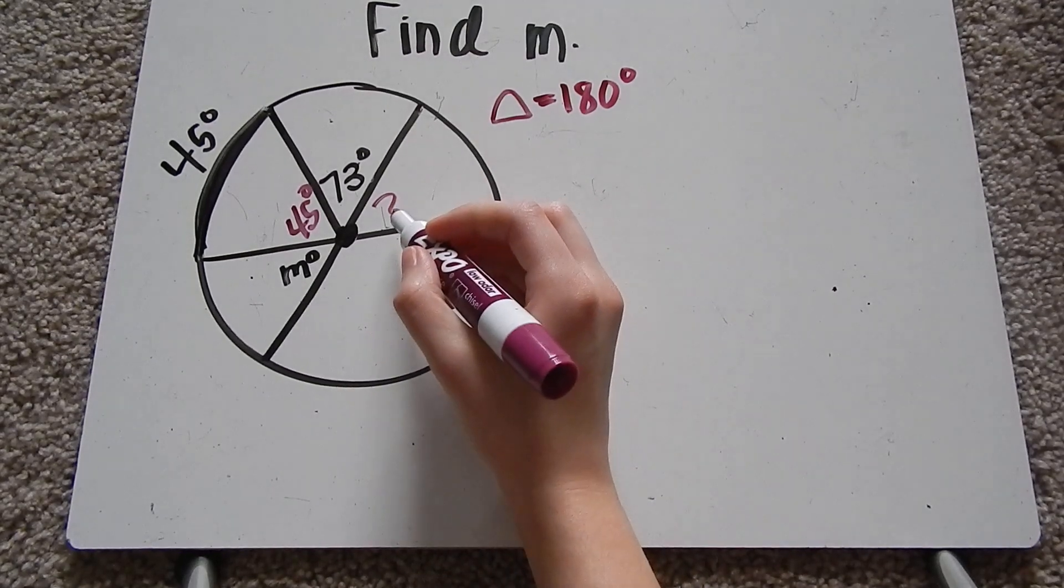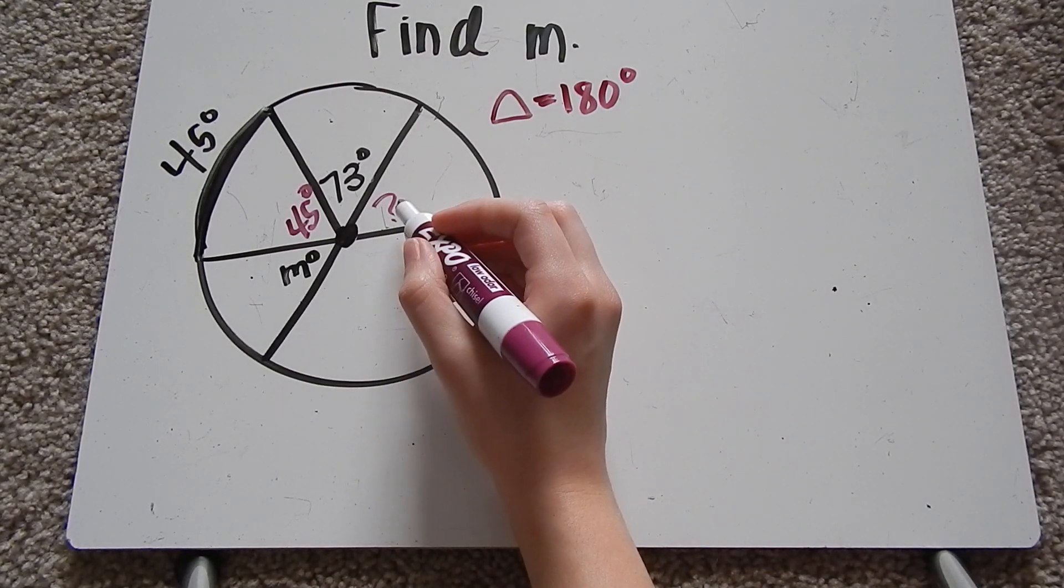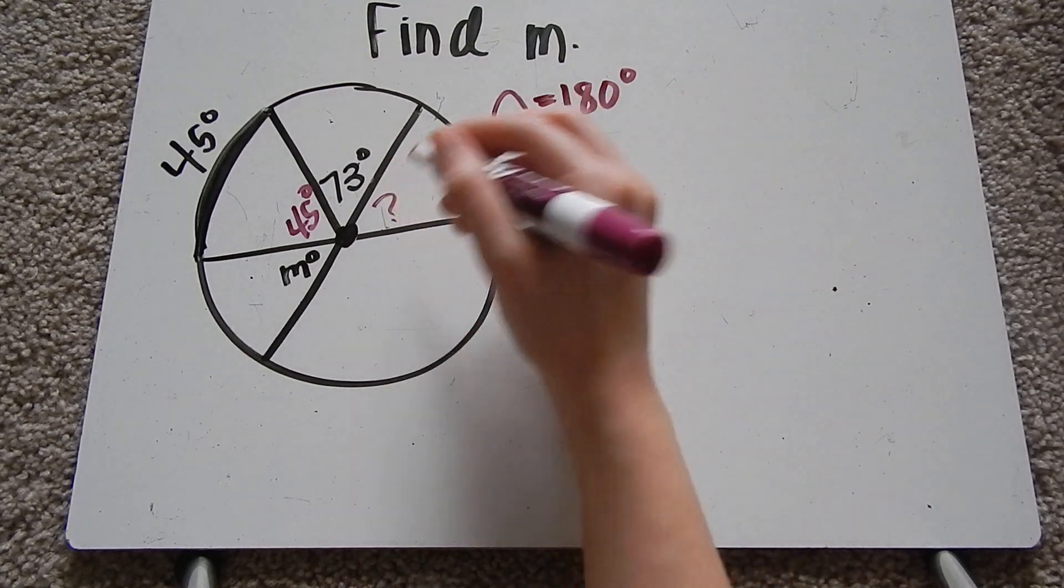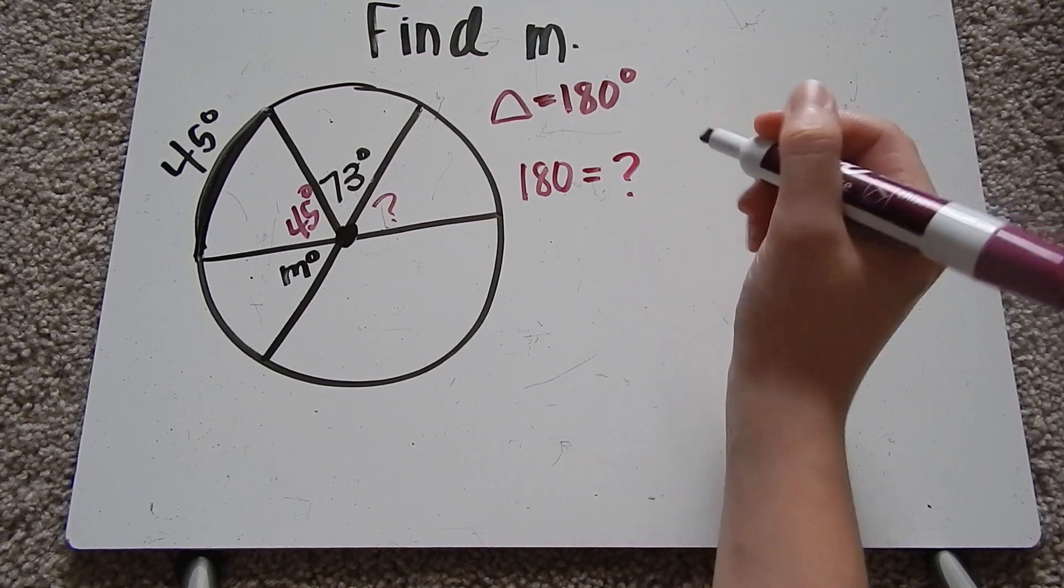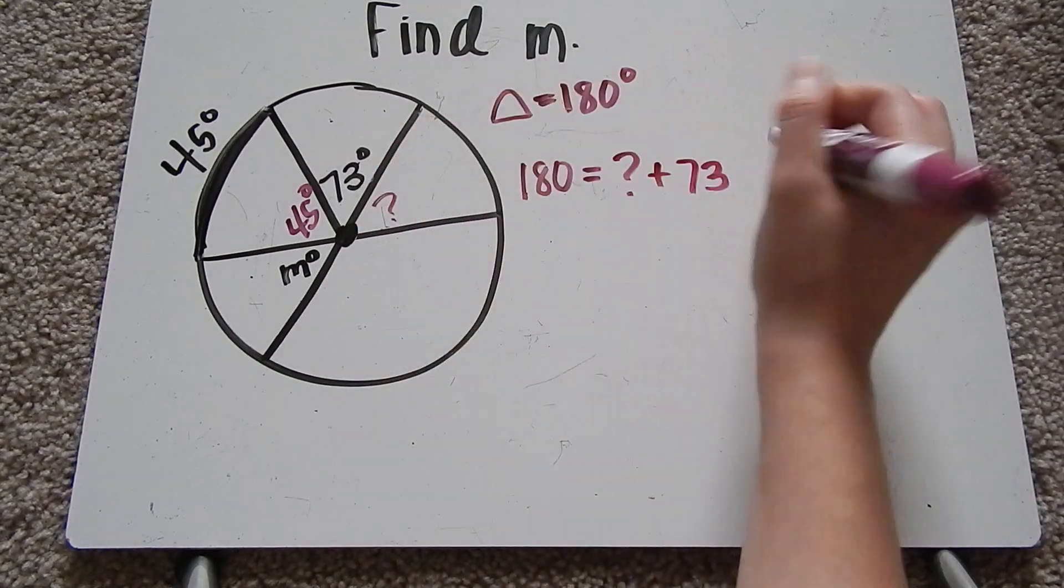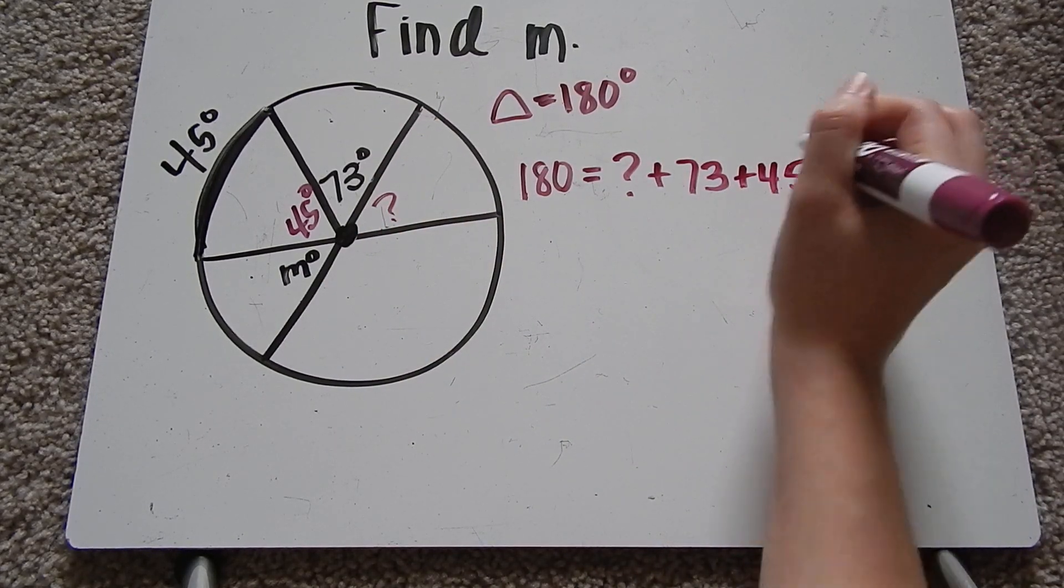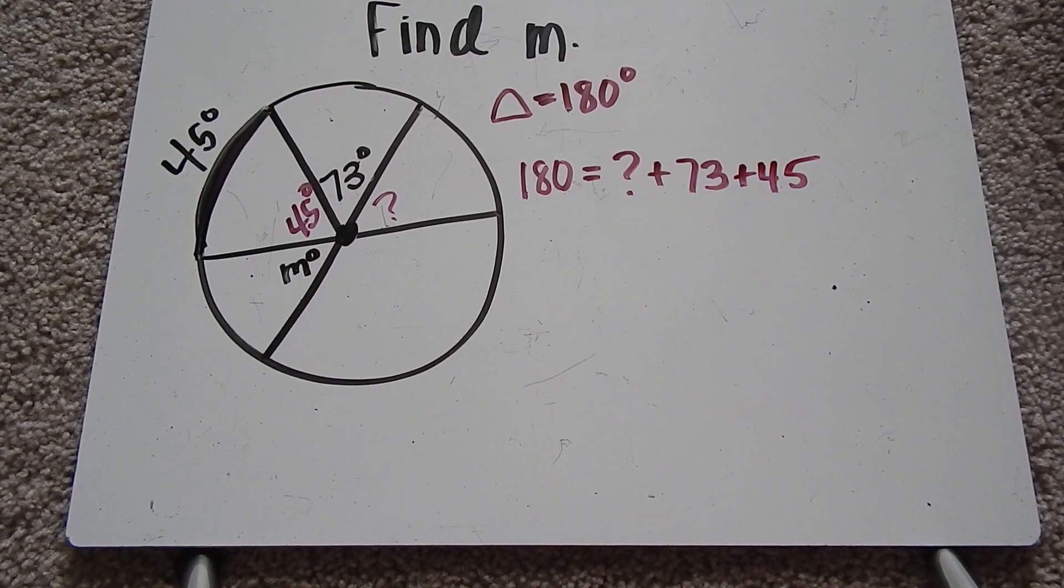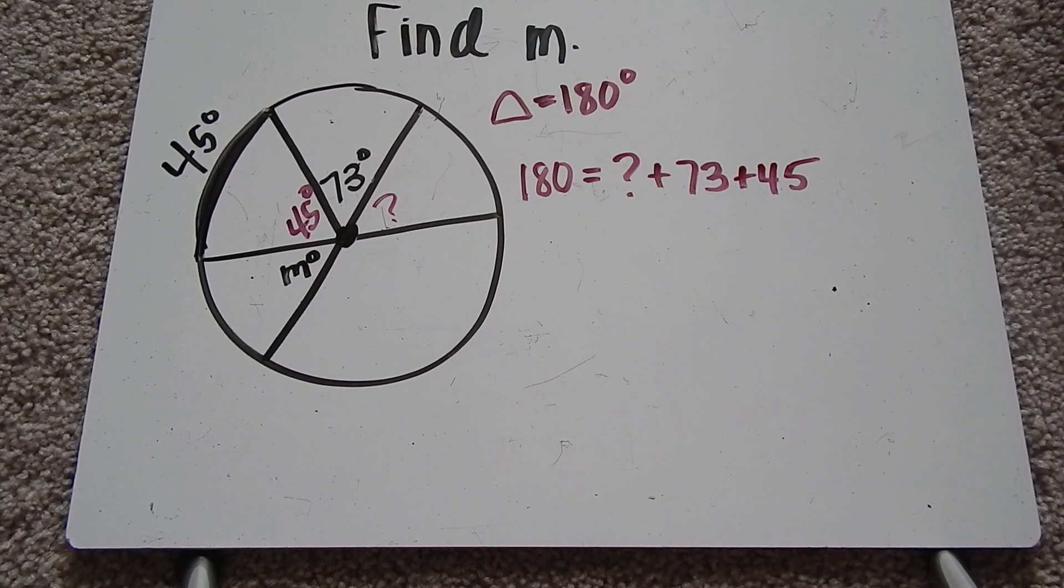So I can figure this out because I have 180 degrees is going to equal this missing piece, which I called question mark, plus 73 degrees plus 45 degrees. So I can figure out the question mark, which is going to help me find the measure of angle m.